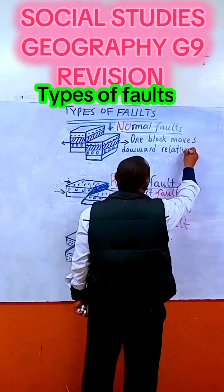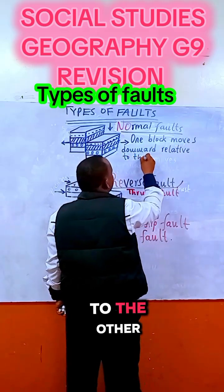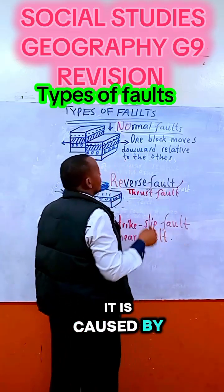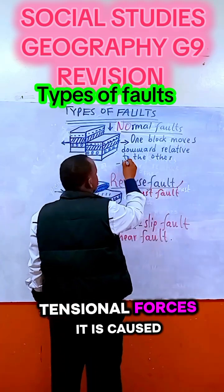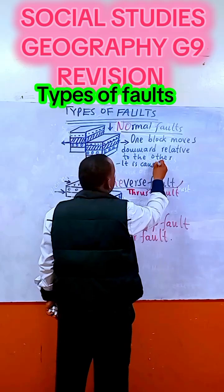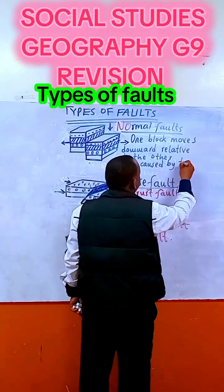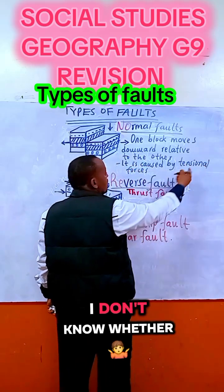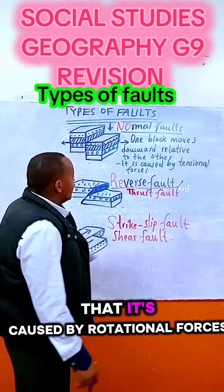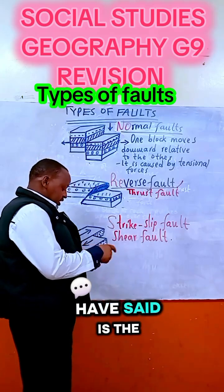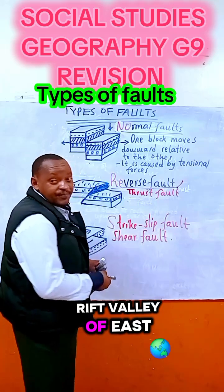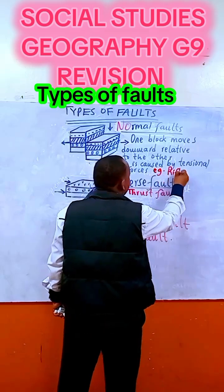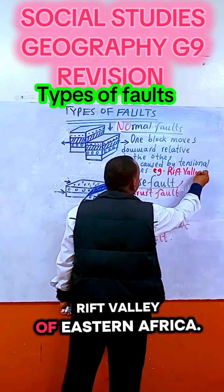One block moves downward relative to the other. It is caused by tensional forces. A good example is the Rift Valley of Eastern Africa.